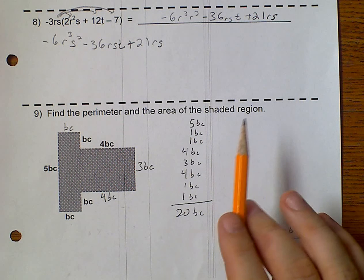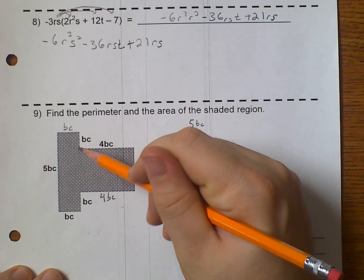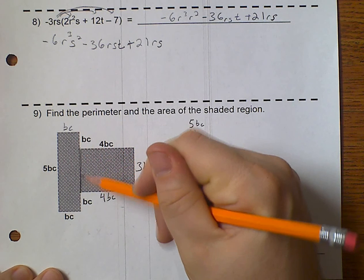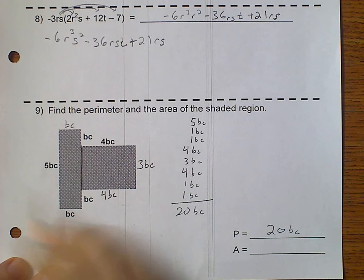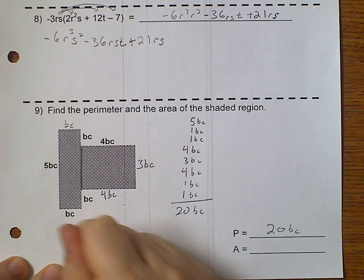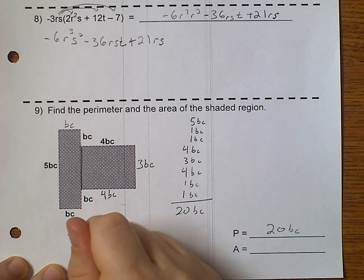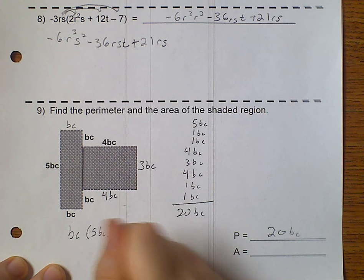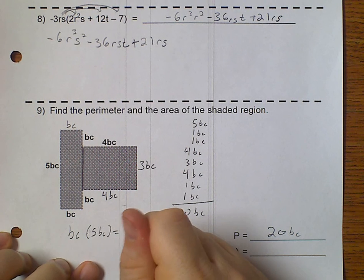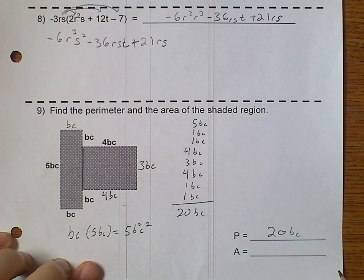Now, if I'm finding the area, I need to break this into two rectangles. This first one would be bc, times 5 bc, would give me 5 b squared, c squared.